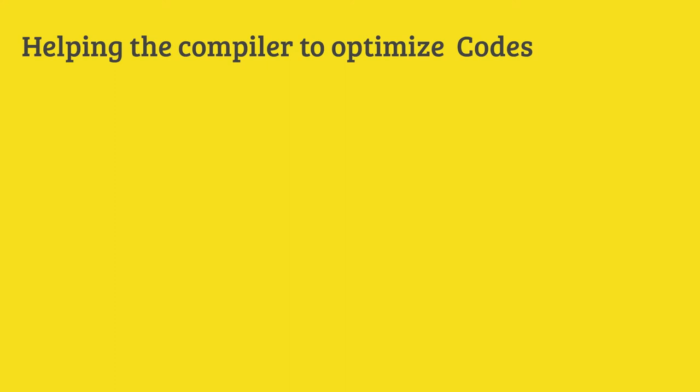Luckily, these keywords are not commonly used in JavaScript. If you don't know about the compiler problem, the first keyword is eval. You can see the code optimize. But there are arguments — arguments are used in most functions. You can avoid them and try it.